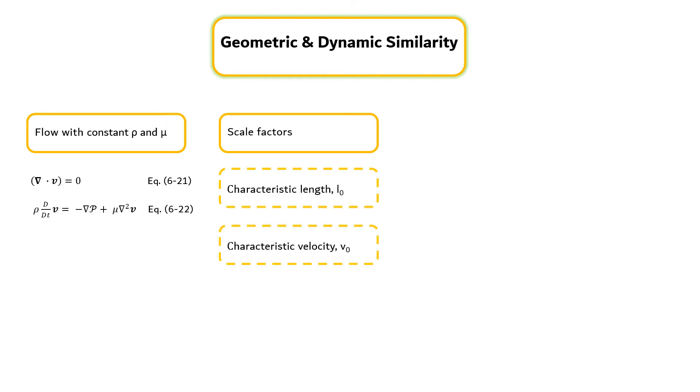For simplicity, we restrict the discussion in this segment to fluids of constant density and viscosity. The equation of change can be expressed by equation 6-21 and equation 6-22. In most flow systems, one can identify the following scale factors: a characteristic length, a characteristic velocity, and a characteristic modified pressure.